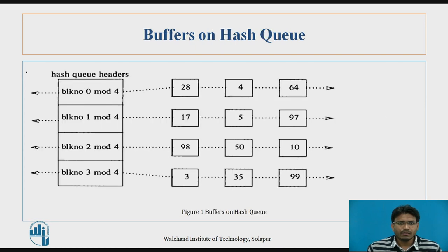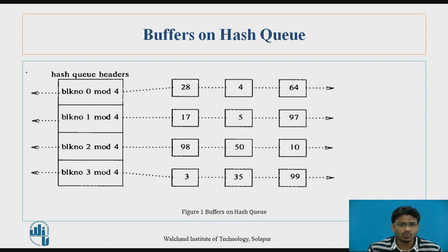Now we will see some examples of how scenarios 2 and 3 work. We have already seen this diagram in our previous videos. Here we have the hash queue headers with a total of 4 blocks — block numbers 0, 1, 2, and 3 — for a maximum of 4 blocks. That is why in the hashing function the value of n is 4. The buffers 28, 4, and 64 are present in the buffer pool.